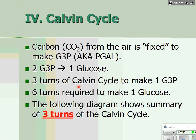It takes three turns of the Calvin cycle to make one molecule of G3P, because every turn pulls in one molecule of carbon dioxide. It takes three carbon dioxides to make one G3P, and therefore at least six turns of the Calvin cycle to make one glucose. The diagram we'll use is a summary of three complete turns, so all the numbers of molecules assume the cycle has turned three times.